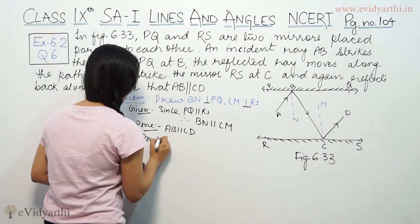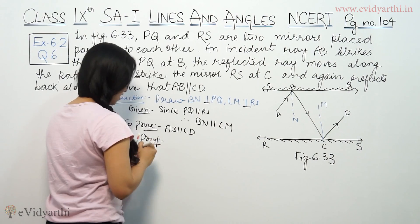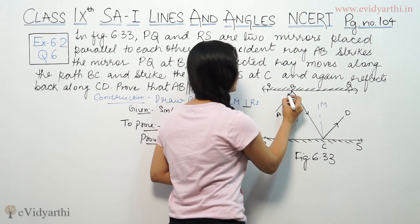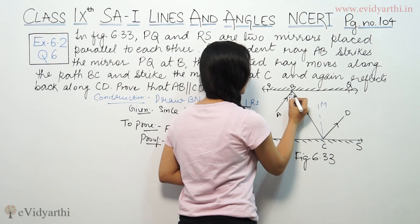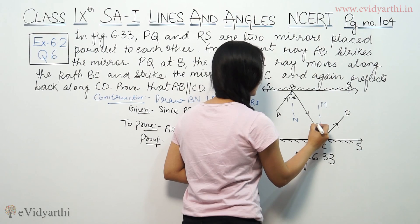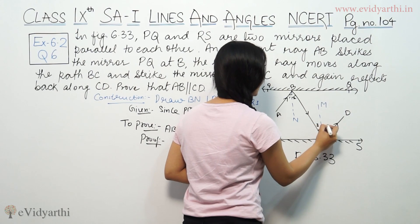Proof: Now let's label the angles. Let's suppose angle 1, angle 2, angle 3, and angle 4 at the points of incidence and reflection.